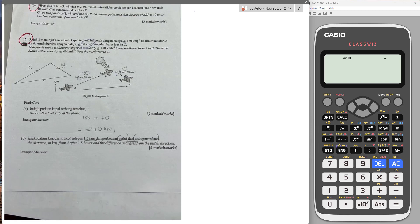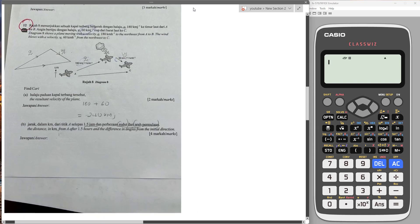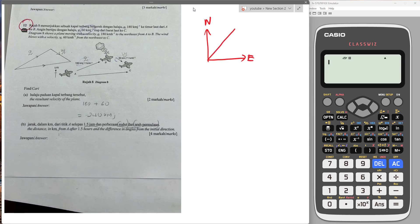In this question, the diagram shows a plane moving with velocity A, 180 kilometers per hour, to the northeast from A to B. At first, you need to know how to interpret northeast. If this is north and this is east, then northeast is here. The angle A is always 45 degrees because this is what we call northeast. This is the first thing you need to know.